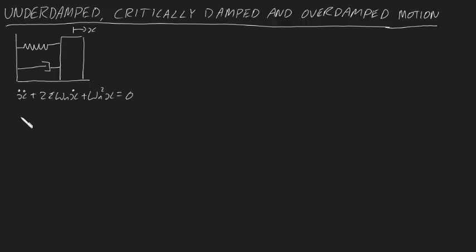Once you go through all the mathematics, you can tell that if ζ is less than one, then the block will undergo something we call underdamped motion, and that means it has the equation x equals Ae^(-ζωₙt) times sin(ωₐt + φ). I'll talk about the term ωₐ shortly.